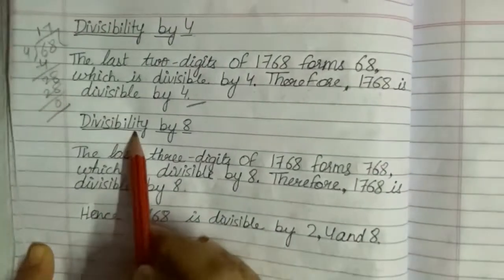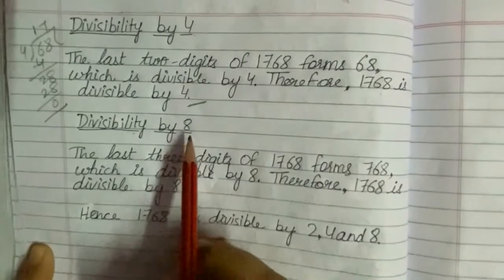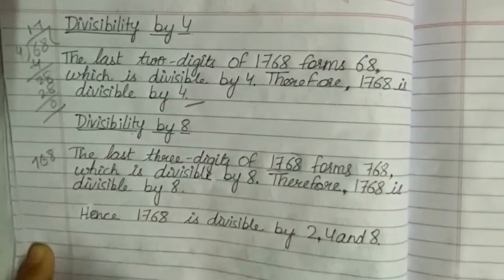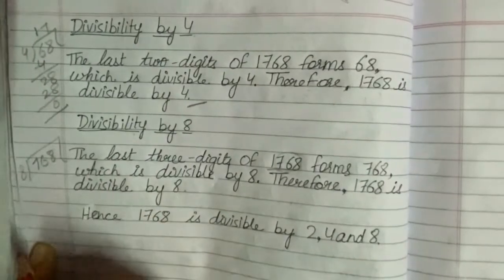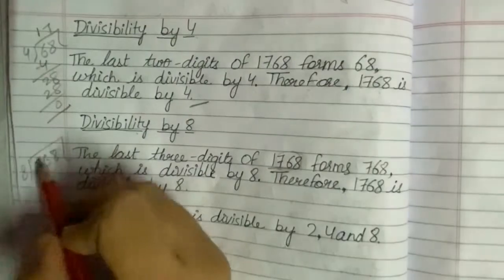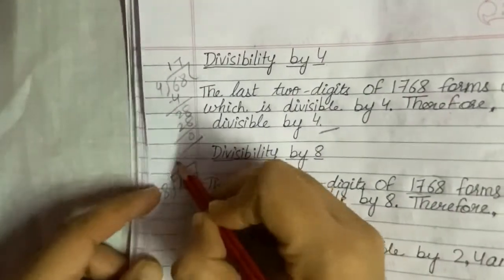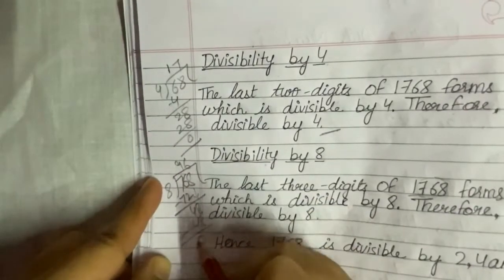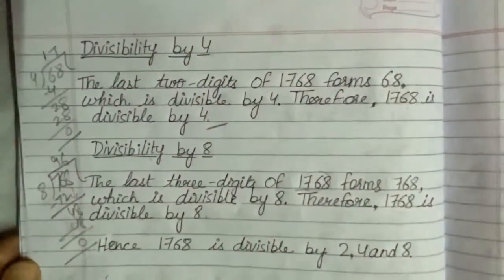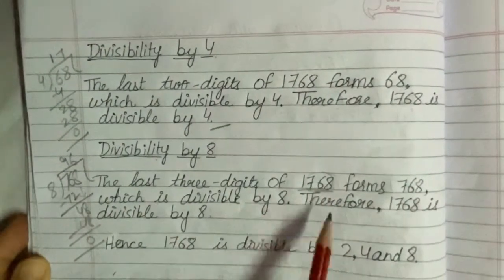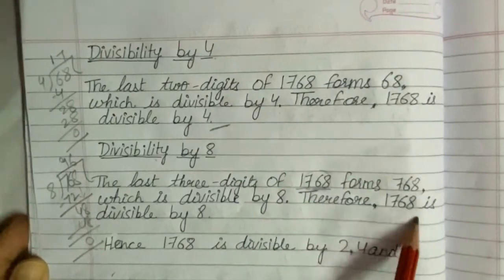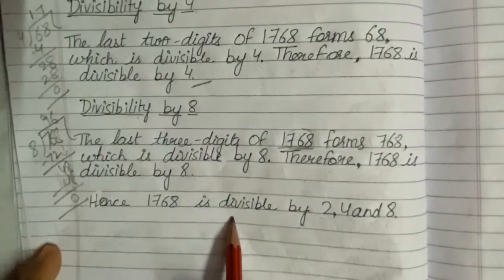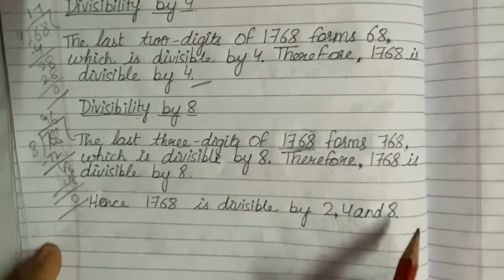Now in the last, we will check its divisibility by 8. Here in 1768, the last three digits form the number 768. We will divide this number by 8. On dividing: 8 nines are 72, carrying forward gives 48, and 8 sixes are 48. We get a remainder of 0. That means 768 is divisible by 8. Therefore, 1768 is also divisible by 8. So, 1768 is divisible by 2, 4 and 8.